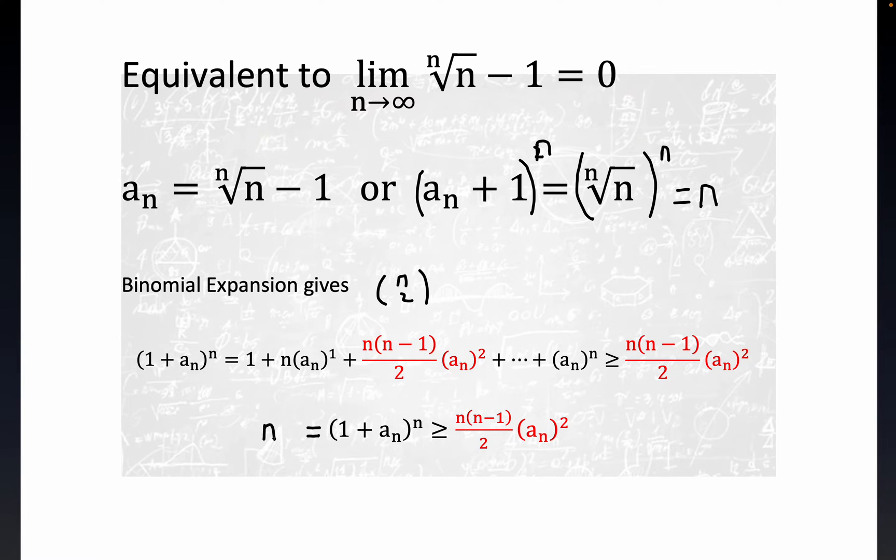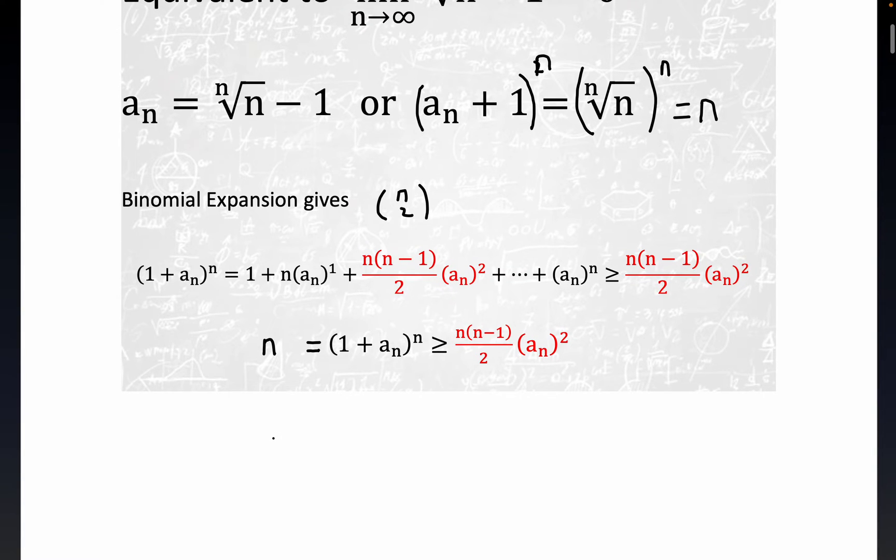From here what we can do is just a little bit of algebra. If we divide through by this, let me write this down for you. I believe you end up right here—and again you can check the algebra here—you'll end up with 2 over n minus 1, like this.